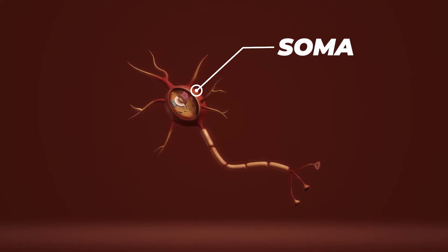The soma contains the nucleus, with things like DNA and important proteins. From that trunk extend the branches, and the branches of our brain cell are called dendrites. Under a microscope, you can see them branching out, and you can even see tiny little leaf-like structures at the end of them called spines. This is where information is communicated into our cells.